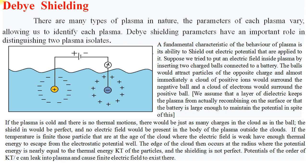If the temperature is finite, those particles at the edge of the cloud where the electric field is weak have enough thermal energy to escape from the electrostatic potential well. The edge of the cloud then occurs at the radius where the potential energy is nearly equal to the thermal energy k_T of the particles, and the shielding is not perfect. Potentials of the order of k_T/e can leak into the plasma and cause finite electric fields to exist there.